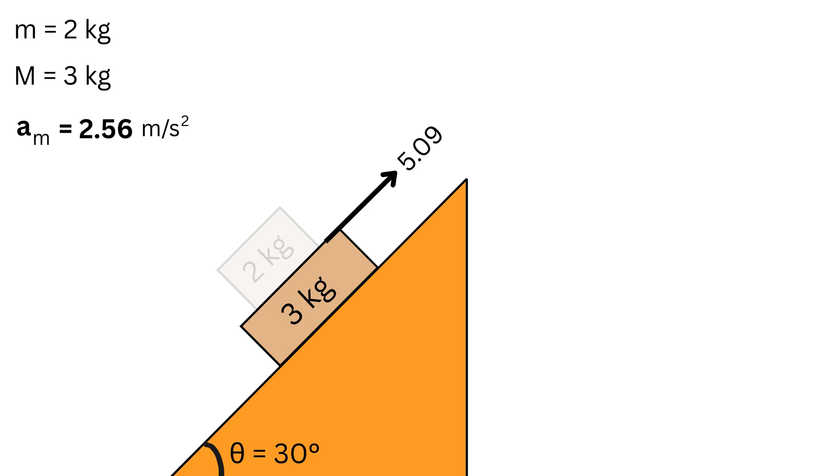At the same time, the bottom block has its own weight component along the incline pulling it down. So the net force on the bottom block is therefore the friction up or 5.09 minus its gravity component down, which will be mg sin(theta) or 3g times half or 14.7. Dividing this net force by the mass of the bottom block or 3 gives its acceleration, which comes out minus 3.2 meters per second squared.